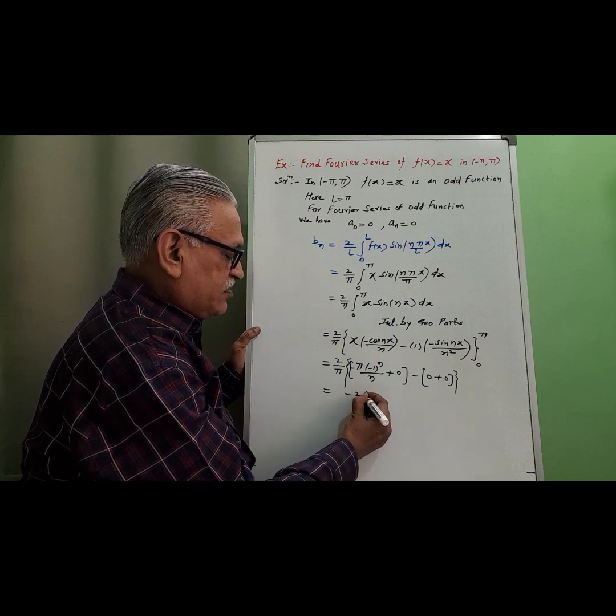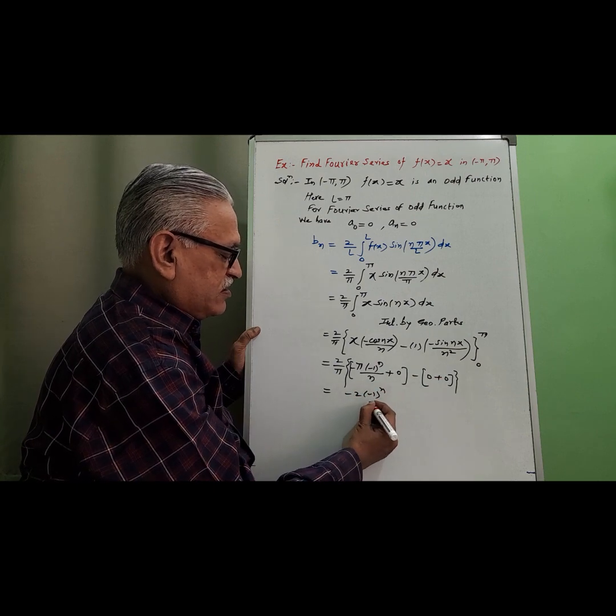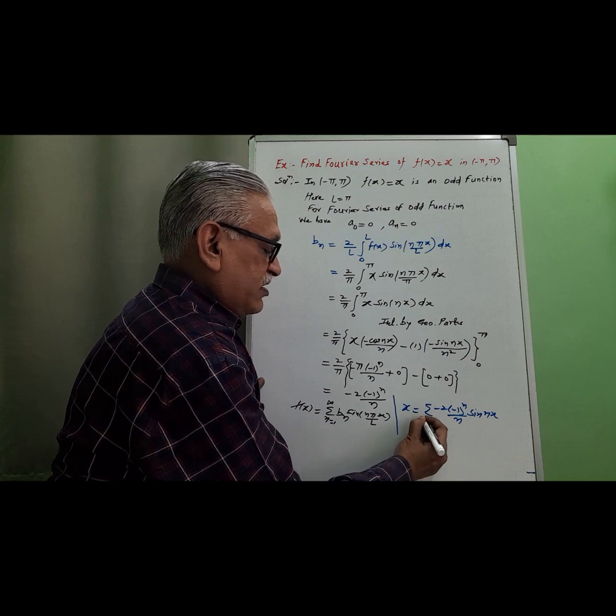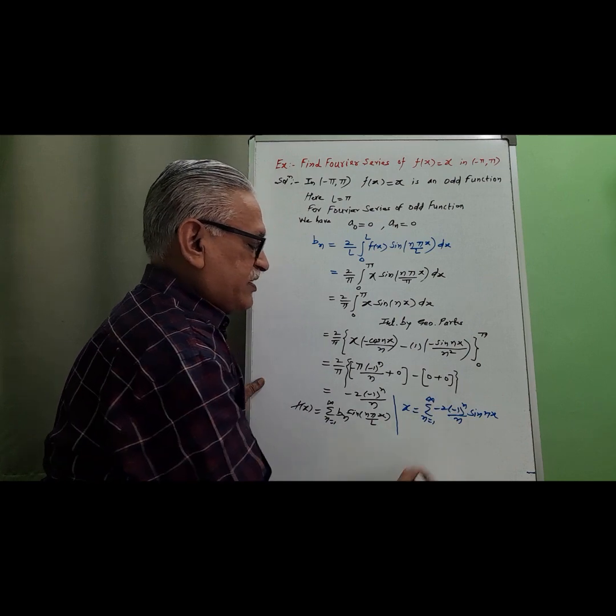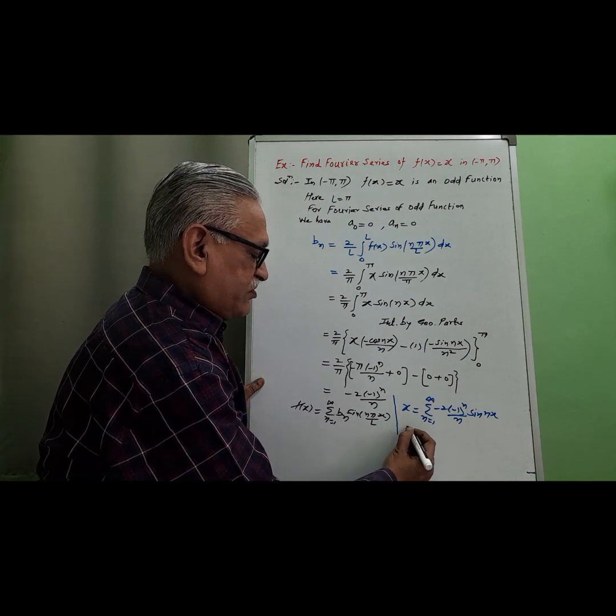Therefore bₙ = -2(-1)ⁿ/n, where n ranges from 1 to infinity. This is the required Fourier series.